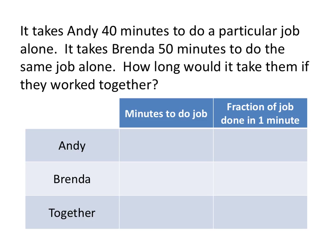So first of all, we know that it takes Andy 40 minutes to do the job. And that means just like we were talking before, in each minute, he gets 1/40th of the job done. Similarly, Brenda takes 50 minutes to do the job. And so in each minute, she gets 1/50th of that job done.